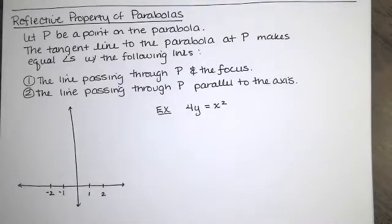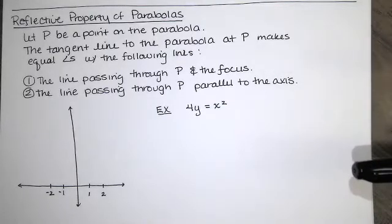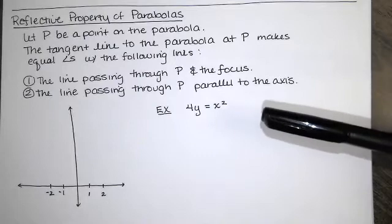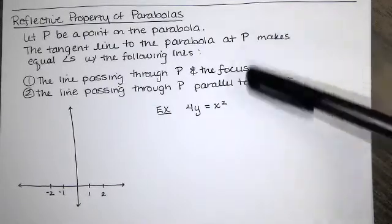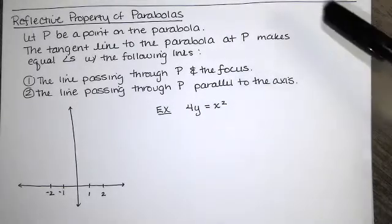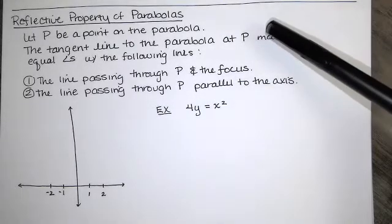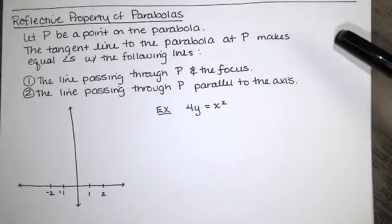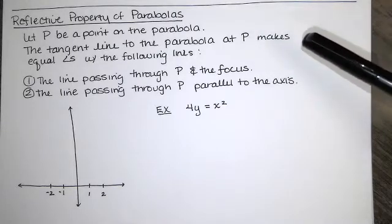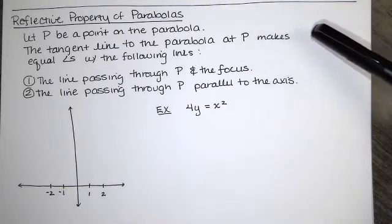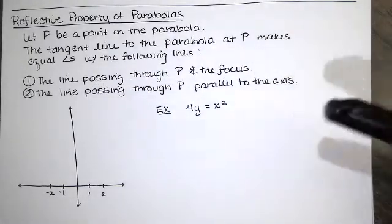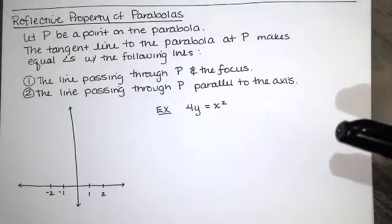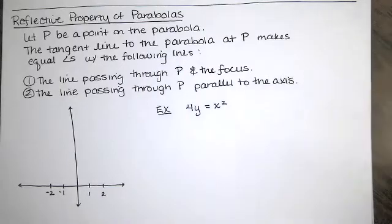In this video, we'll briefly discuss the reflective property of parabolas. I wanted to show you a concrete example. Here's the property: let P be a point on the parabola. Then the tangent line to the parabola at P makes equal angles with the line passing through P and the focus, and the line passing through P and parallel to the axis.